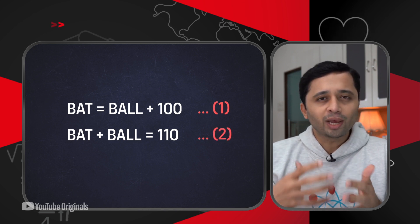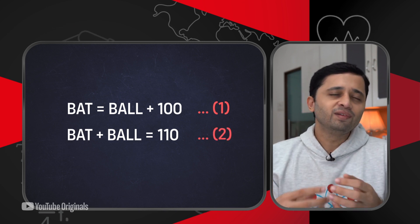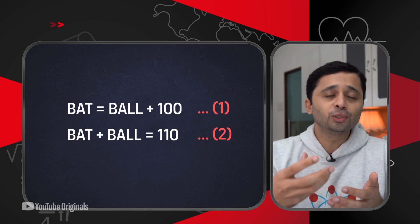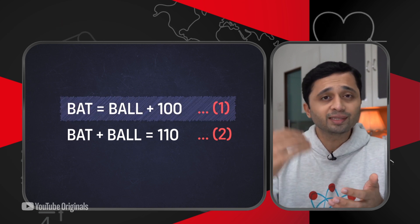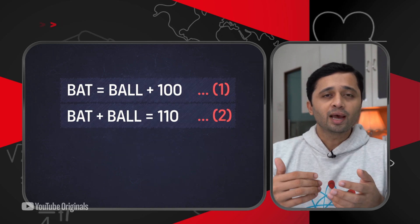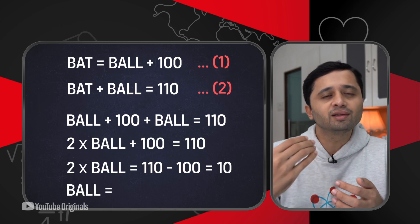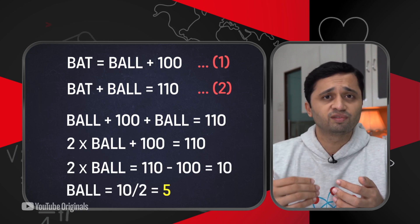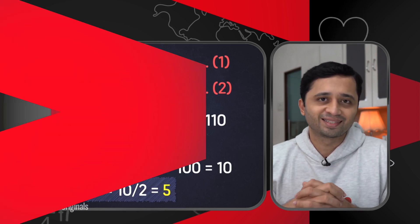And to calculate the value of the ball, all we really need to do is substitute the value of the bat from the first equation into the second one. On solving it further, we will get the value of the ball, or the cost of the ball, as 5 rupees.